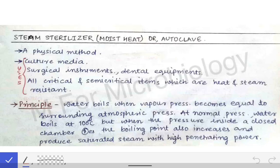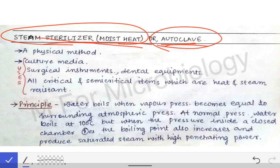We will see another sterilization technique called autoclave, which is also sometimes called a moist heat sterilizer. Whatever name they ask you, you have to write about autoclave. You should know both names, because if you don't know either name, even if you know the answer, you will not be able to write it. So you should know both names.